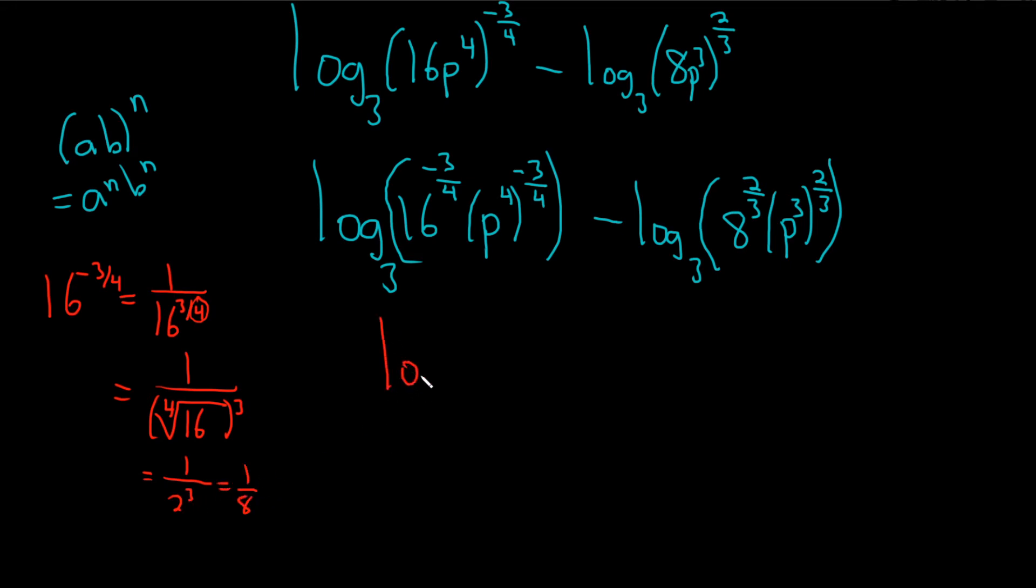This will be the log base 3 of 1 eighth. And then we talked about this, how you just multiply these. So the 4ths cancel. So you get P to the negative 3. Minus log base 3. 8 to the 2 thirds, same deal.